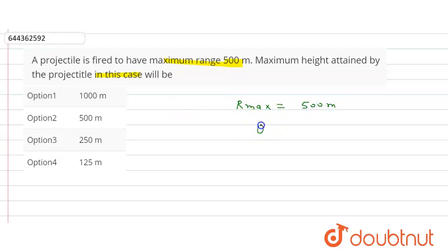And we know for maximum range, theta should be equal to 45 degrees. So R max formula is equal to u squared sine 2 theta upon g.